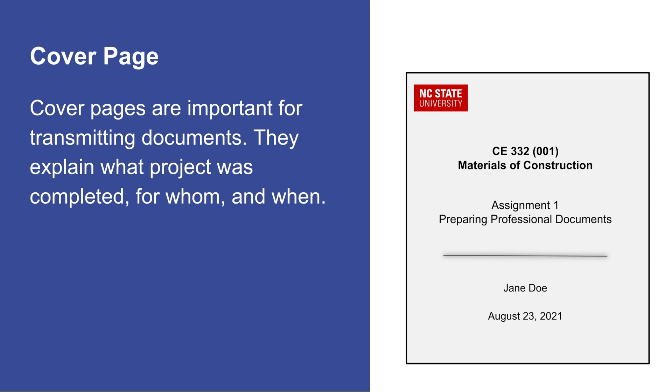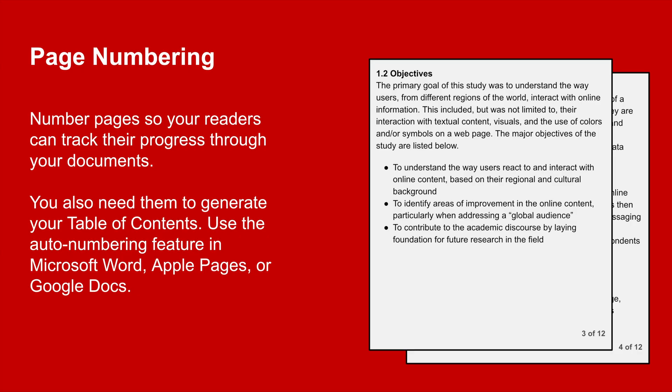In the workplace, cover pages are important for transmitting engineering documents — they explain what project was completed, for whom, and when. Next, you should number your pages so that your readers know how long a document is and where to find information. You can provide simply a page number or, if there are many pages, the page number and total number of pages, such as the example shown on the screen. Your cover page does not count as the first page; instead, you should begin your numbering on the page that follows it. Page numbering is important to help your readers track their progress through your documents.